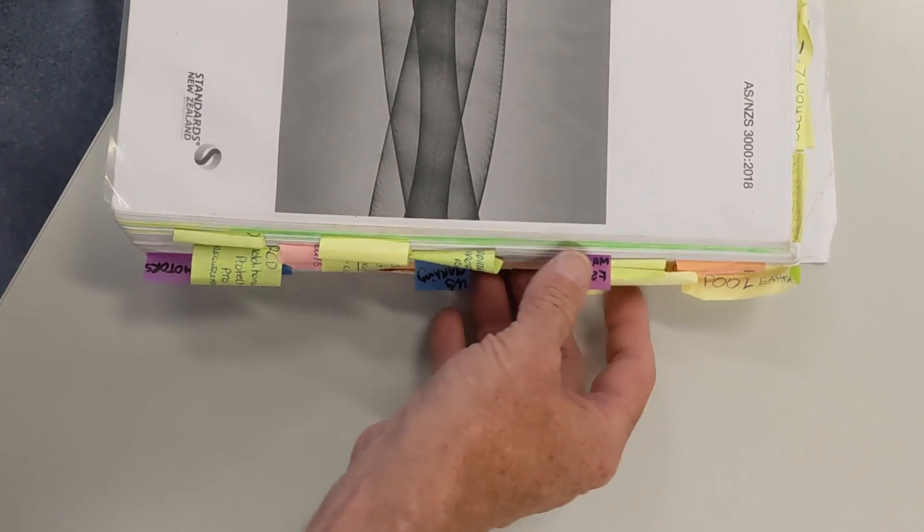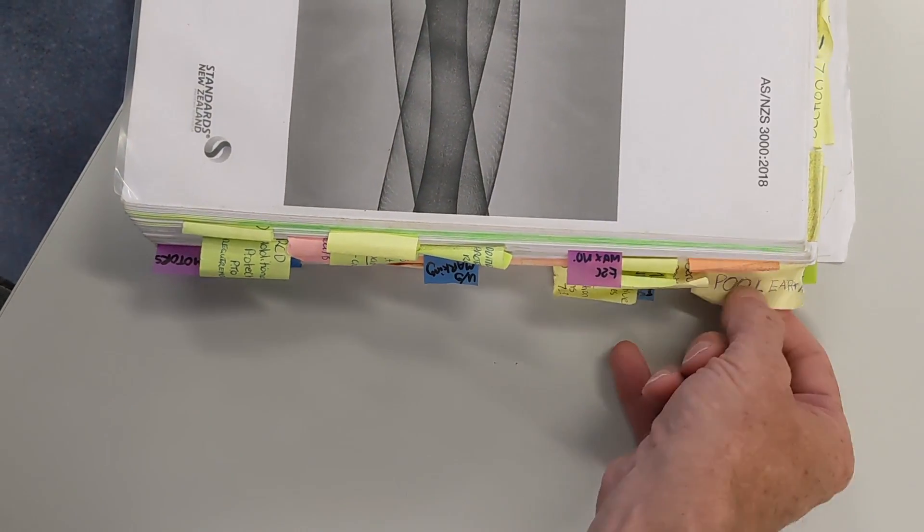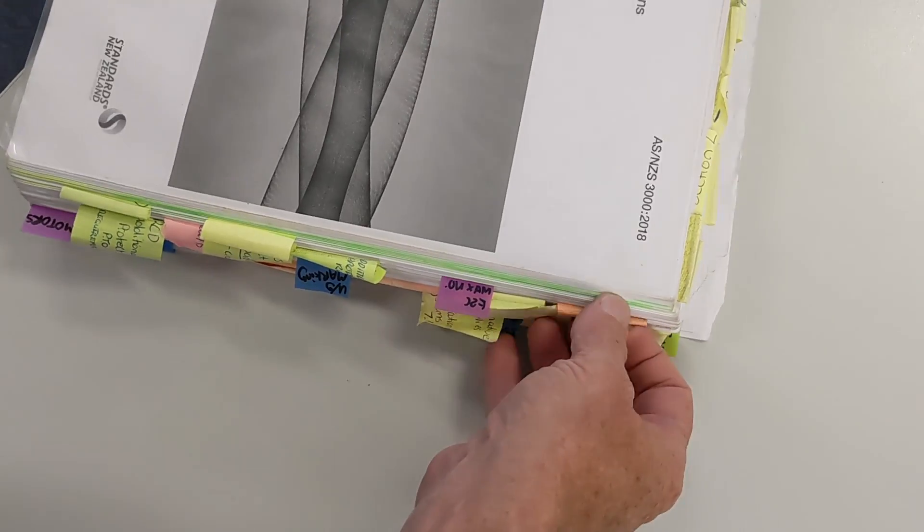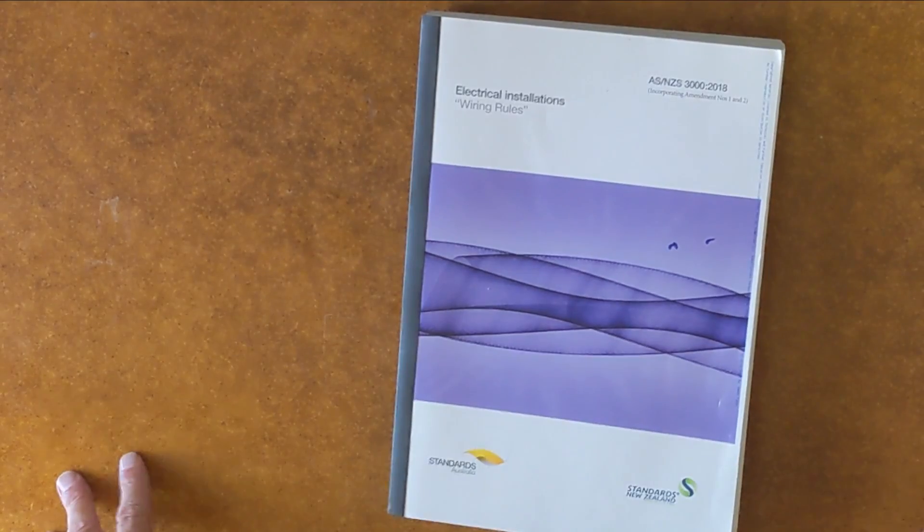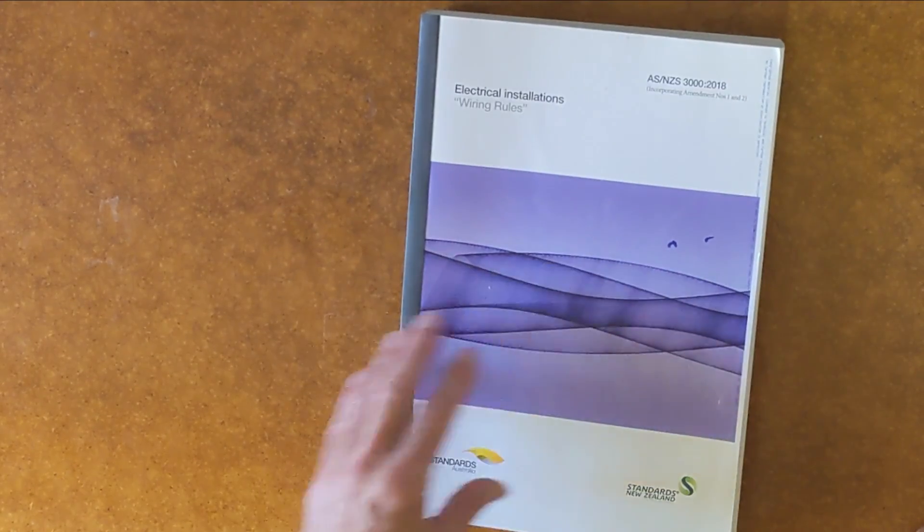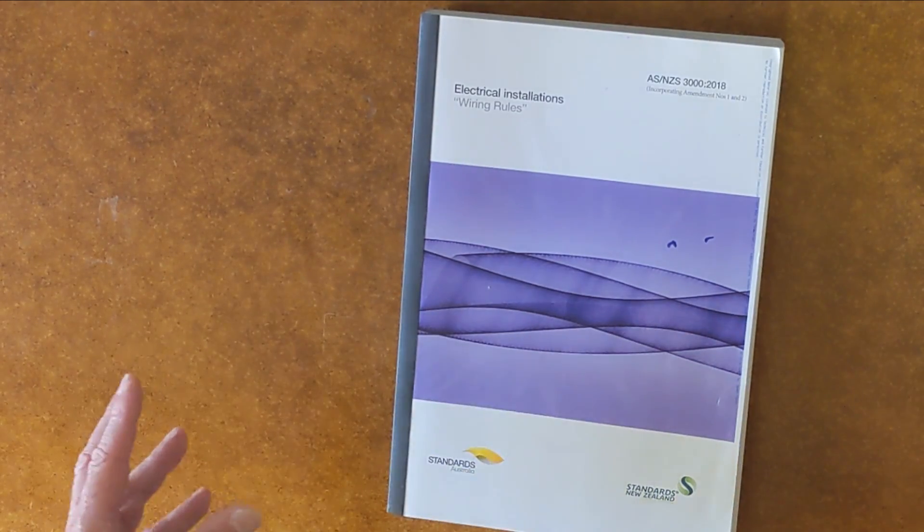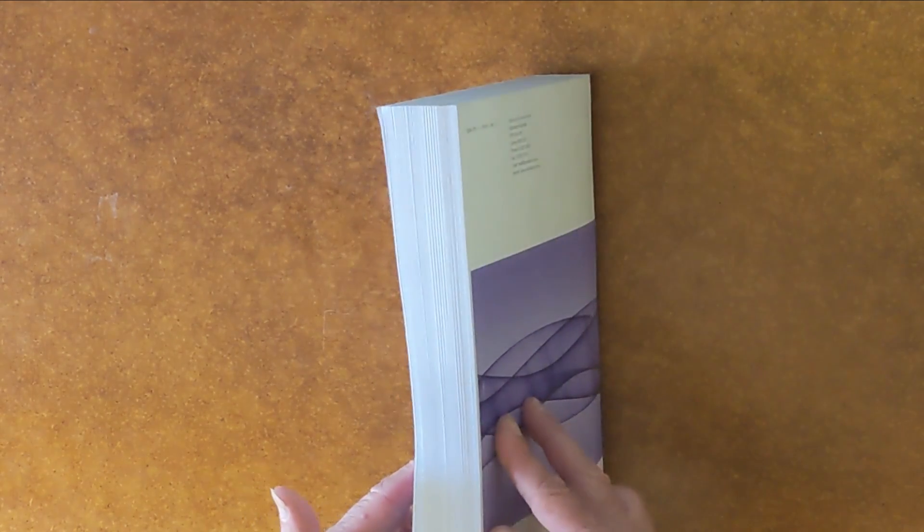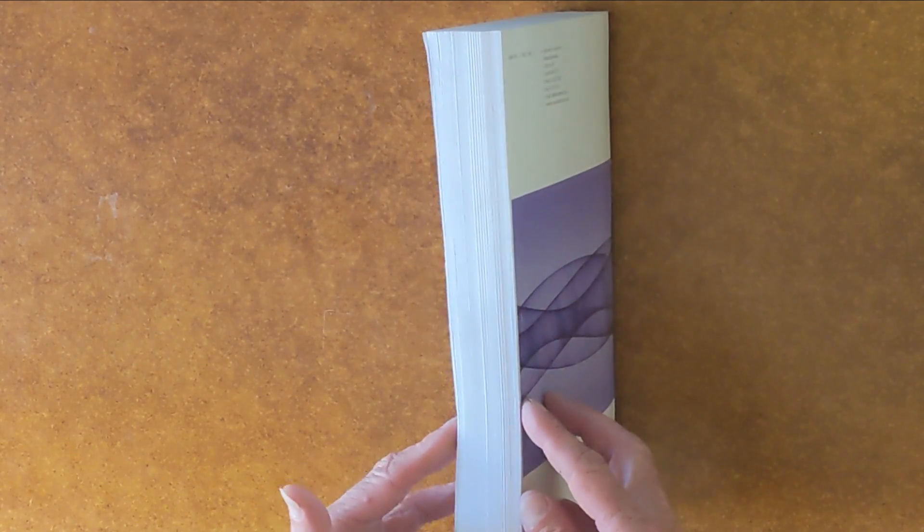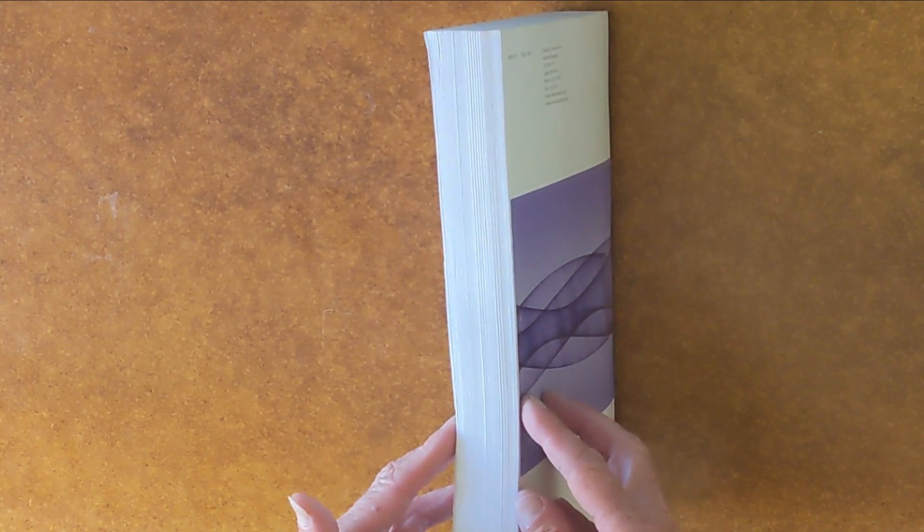Look at these tags. They are useless. They're an impediment to looking up the rules, not assistance. Today I'm going to show you how to tag up your book ready for an exam. Apprentices tend to find this book rather threatening. There's a lot of pages in this book, so we're going to break it down, make it a little bit simpler and easier to understand.